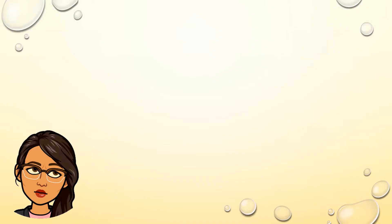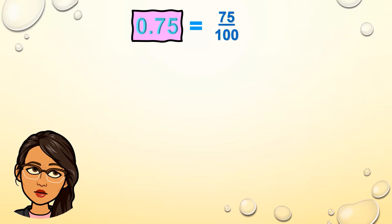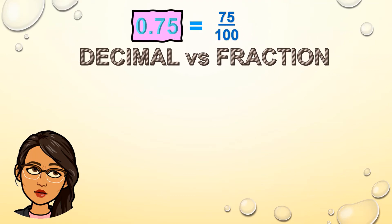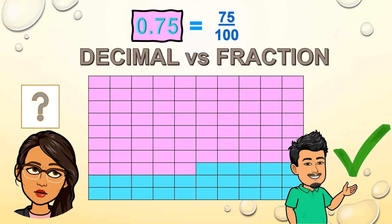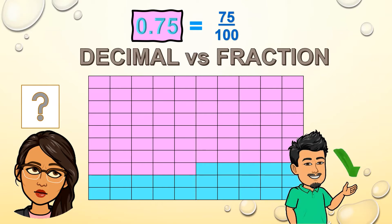You must have wondered how seventy-five hundredths in decimal form is equal to seventy-five over one hundred in fraction form. Let's illustrate this. Suppose I have a box divided into 100 equal parts, and the parts shaded pink total 75 parts. So you have 75 over 100, and you can also express this in decimal form as 0.75, which is read as seventy-five hundredths.